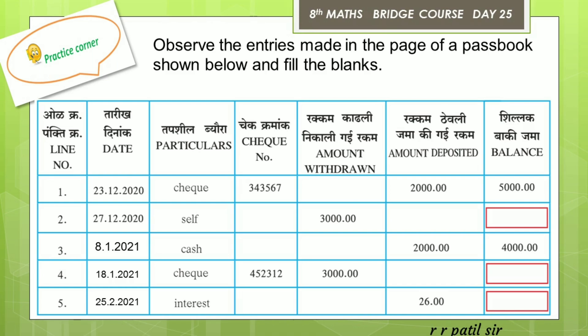Let us see all the entries one by one. The first entry is at 23rd December 2020 — there is a cheque entry. The second entry is also at 23rd December. If you have the balance of the sale, it is 5,000 minus 3,000, which is 2,000.